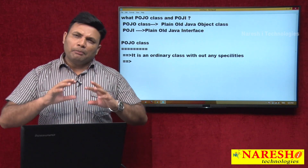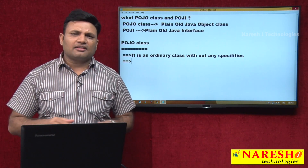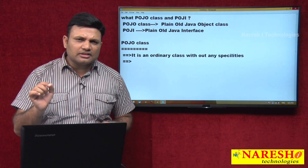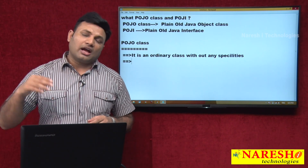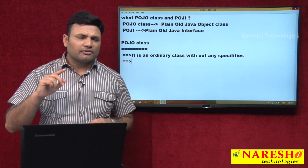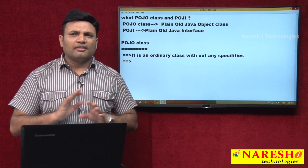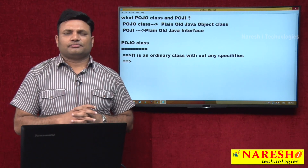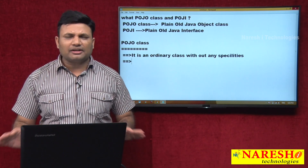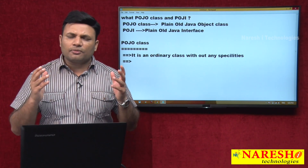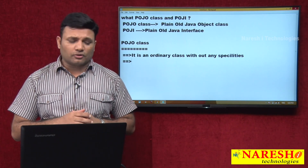Though it is used as a main component of a certain technology application or framework application, if that class is not extending from any technology-specific class, not implementing any technology-specific or framework-specific interfaces, then we call that class a POJO class. It is a loosely coupled class from that framework API and technology API.